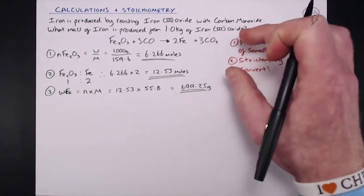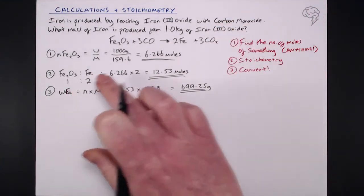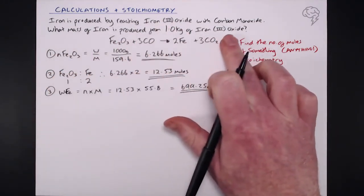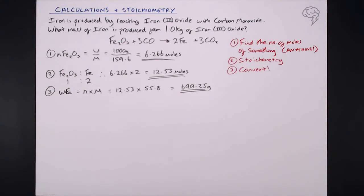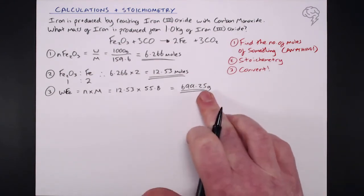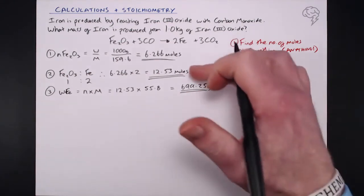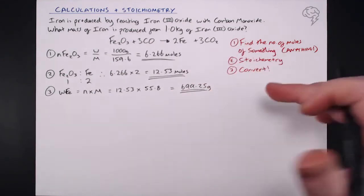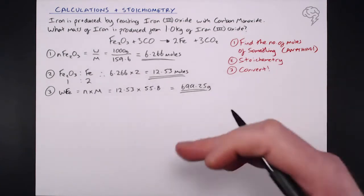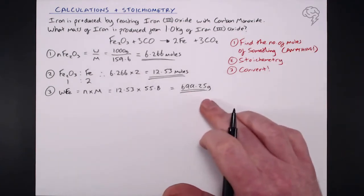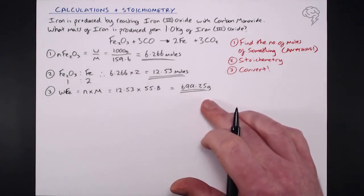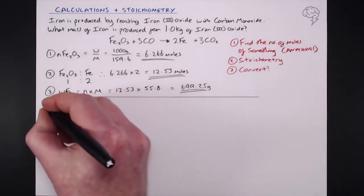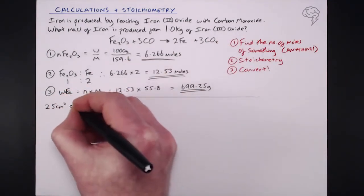So to summarise: find the number of moles of something — anything. Use stoichiometry to get to the substance the question is asking about. Then convert that into the final answer. If the question asks for a mass, a concentration, or a volume, you can always convert using the other information given.